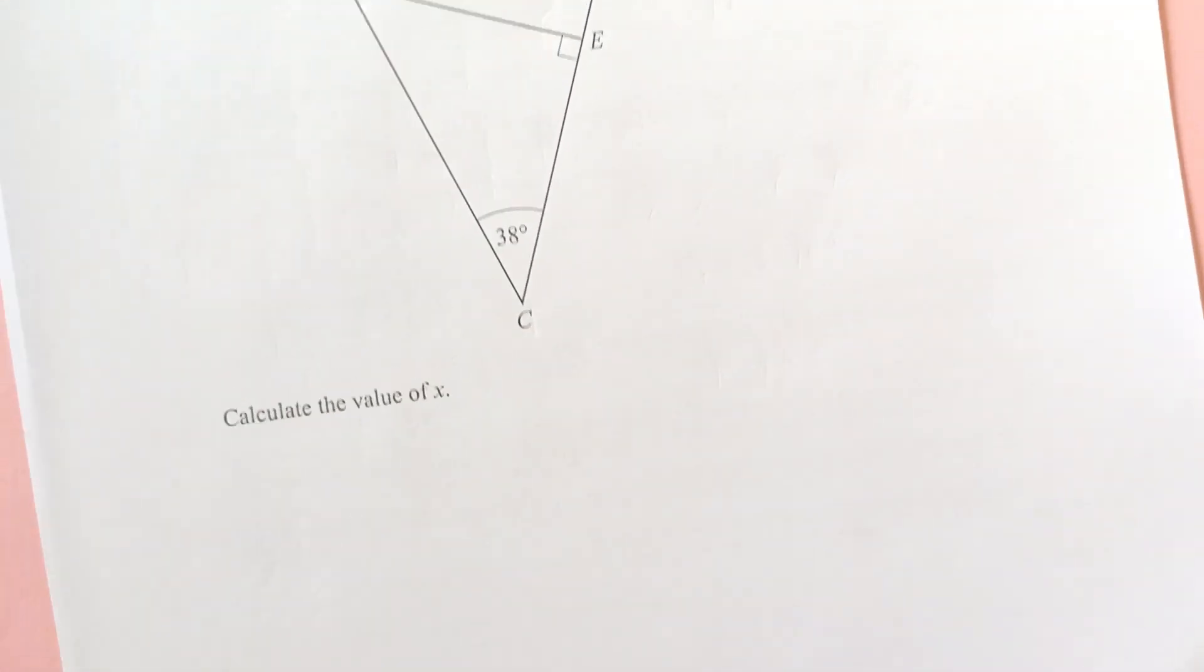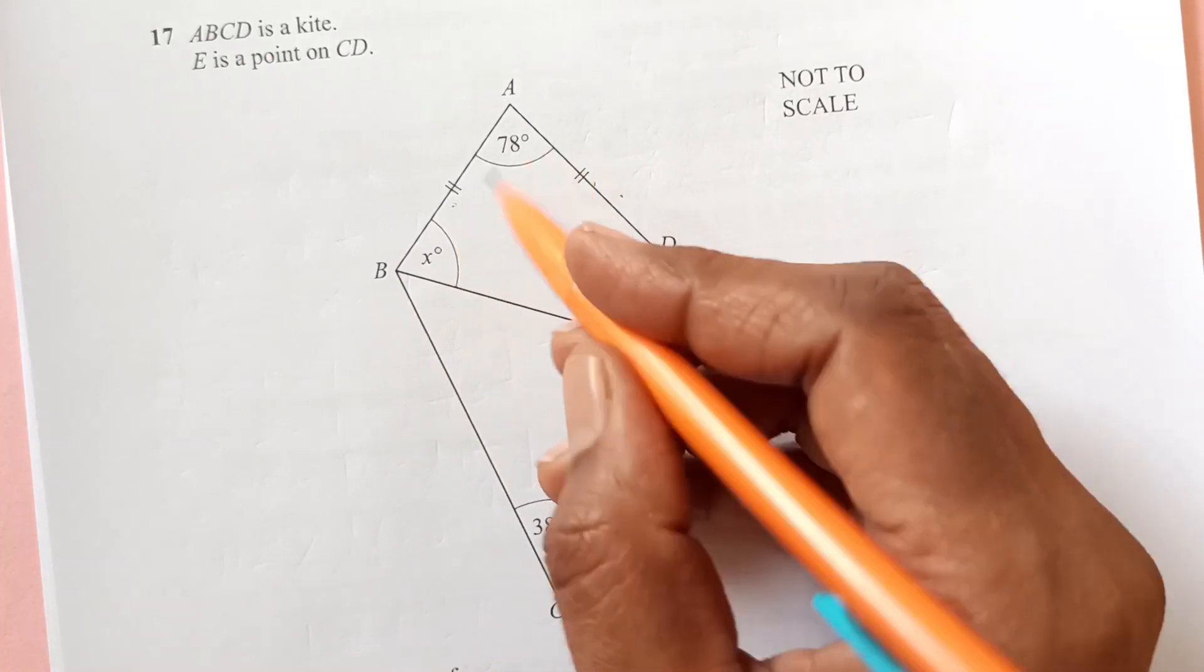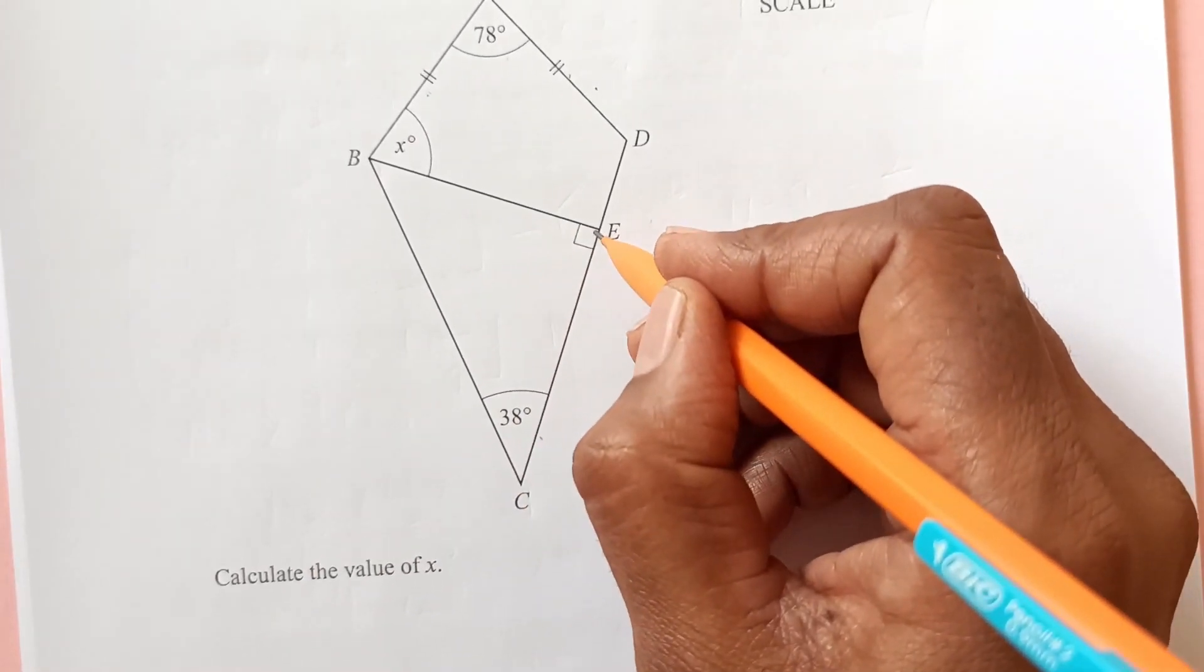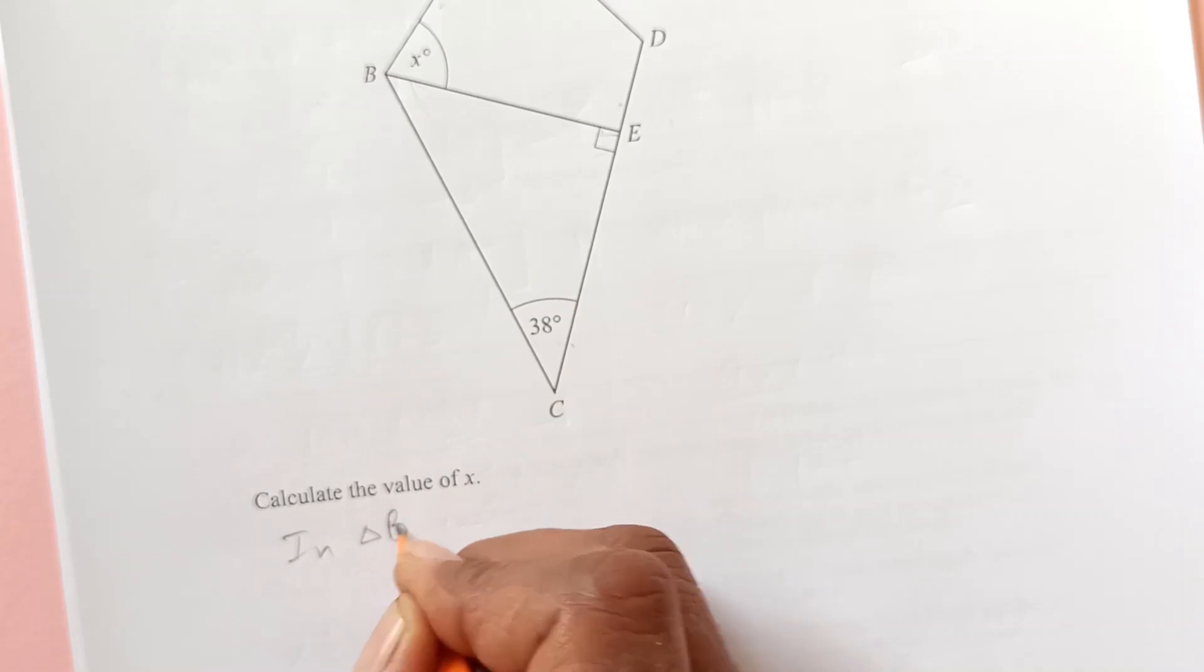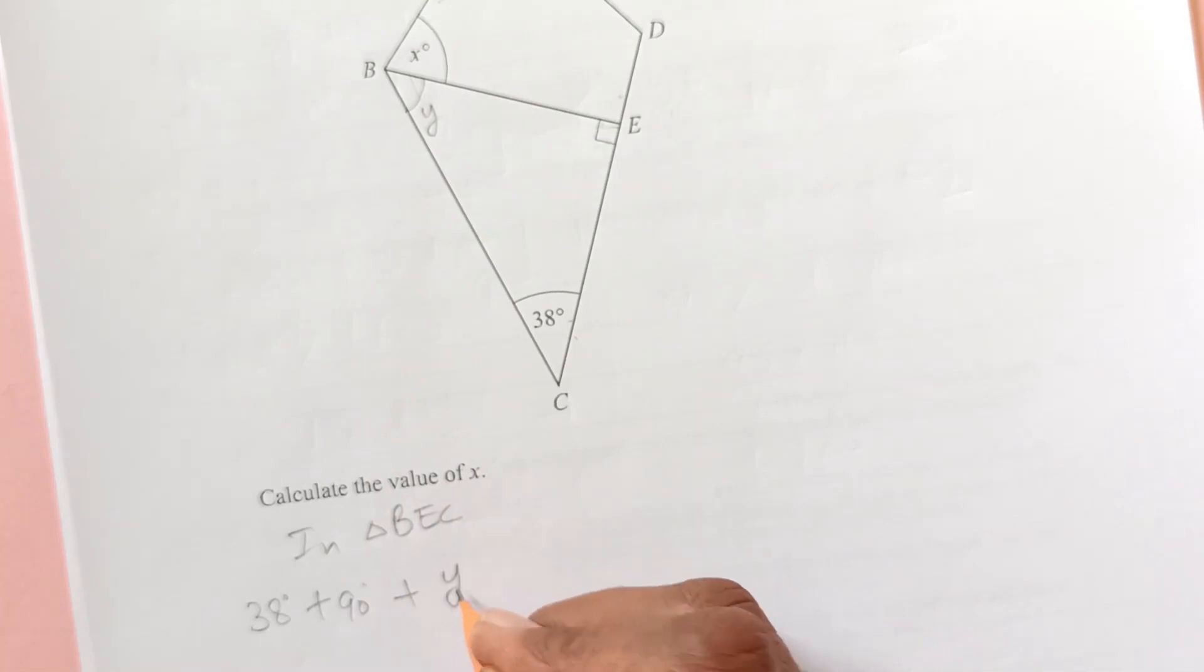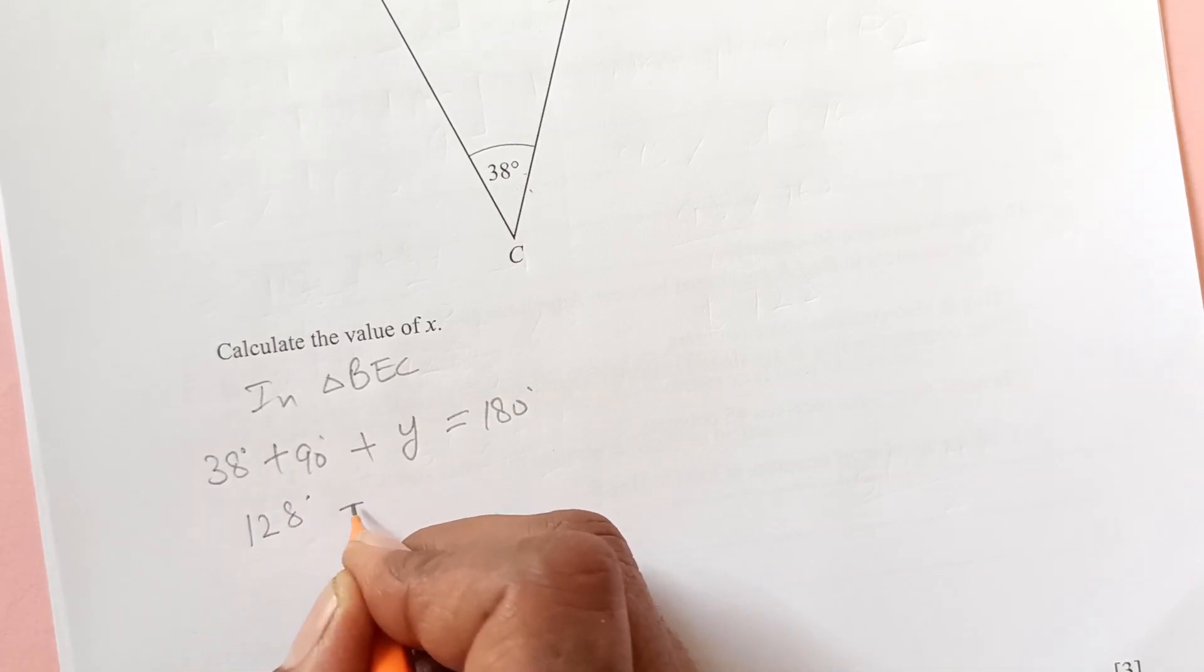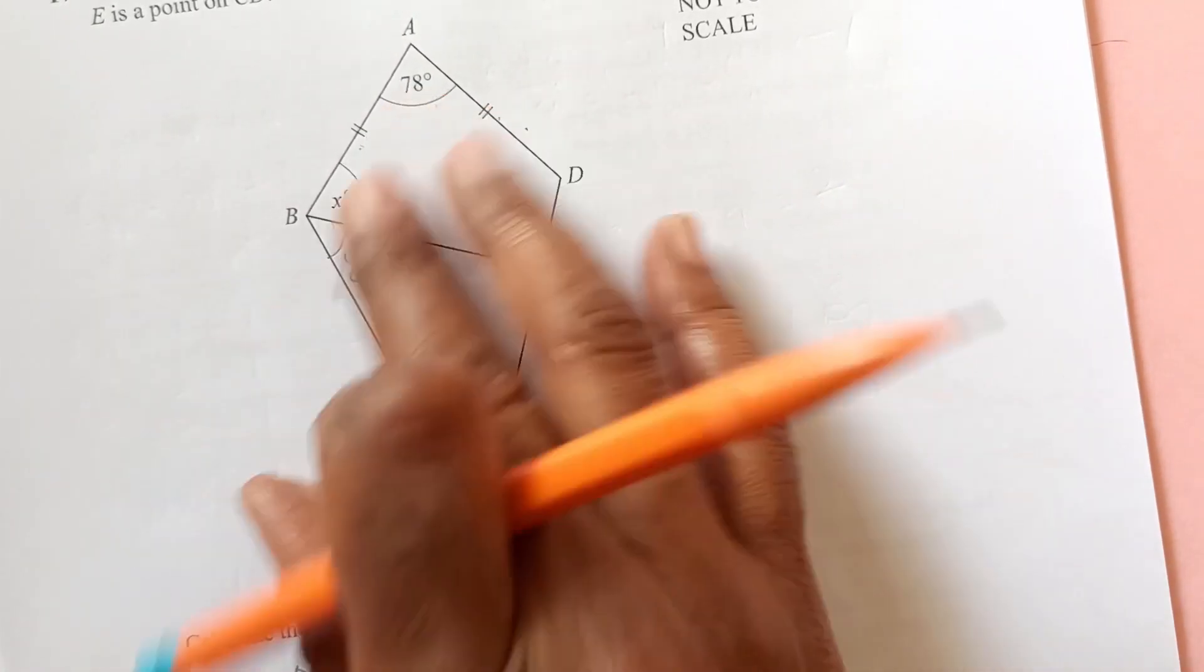Question number 17. We have here ABCD is a kite. We have this kite shape here. These are 2 sides which are equal. And this is 78, 38, X, 90. Calculate the value of X. We are looking for this angle. First we will take this triangle. In this triangle we have this is 90, this is 38. We will write down here in triangle BEC. We have 38 degrees plus 90 degree, this and this plus let's say this angle Y. That all will add up to 180. So this is 128 plus Y equals 180. So Y is 180 minus 128 which is 52. So that means we got this angle as Y is 52.